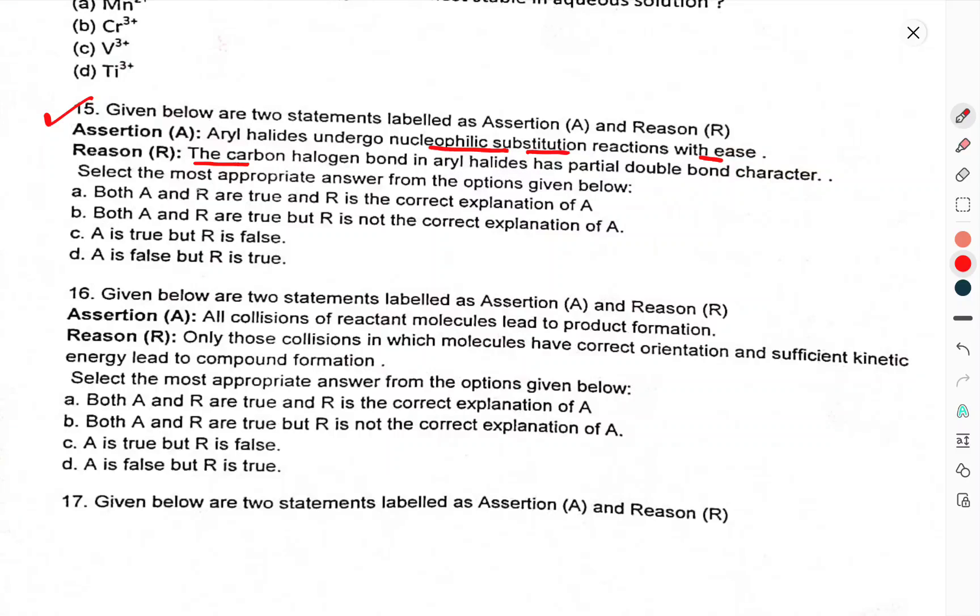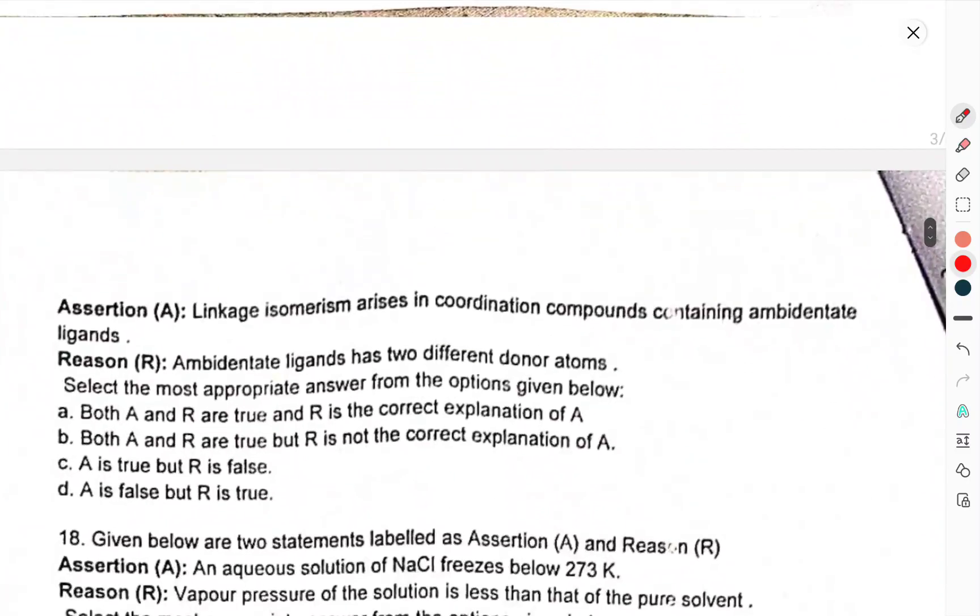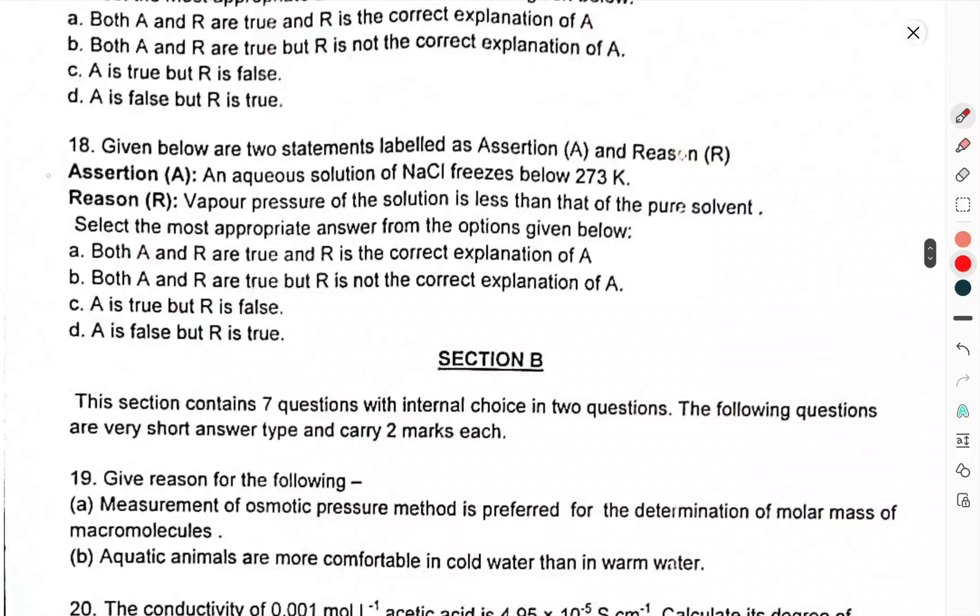Assertion-Reason type questions: Given below are two statements labeled as Assertion and Reason. Question 15: Assertion: Aryl halides undergo nucleophilic substitution reactions with ease. Reason: The carbon-halogen bond in aryl halides has partial double bond character. Select the appropriate answer. Question 16: Assertion: All collisions of reactant molecules lead to product formation. Reason: Only those collisions in which molecules have correct orientation and sufficient kinetic energy lead to compound formation. Question 17: Assertion: Linkage isomerism arises in coordination compounds containing ambidentate ligands.